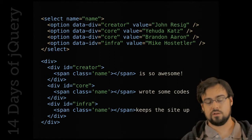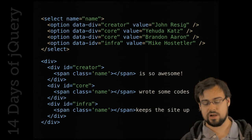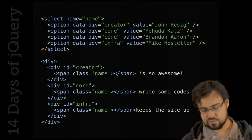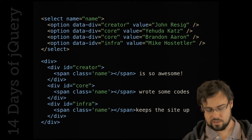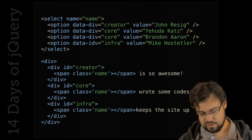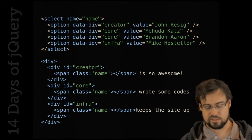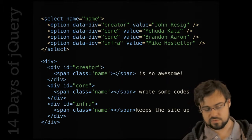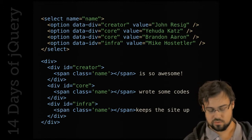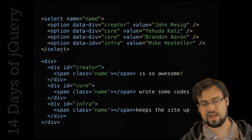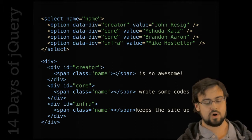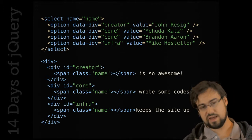Here's another simple example: you have a select box with some options. Its name is 'name' and inside there's a bunch of data — members of the jQuery core team. There's a data-div called 'creator' with a value of John Resig, then core people like Brandon Aaron, and infrastructure team member Mike Hostetler. Underneath there are divs with IDs of 'creator,' 'core,' and 'infrastructure,' each with a span for the name. It's a standard setup where selecting a person shows the corresponding div and fills in their name.